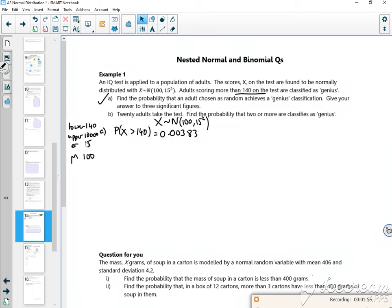Part b says 20 adults take the test. So now it's become discrete. I've got 20 adults taking the test. Find the probability that two or more of them are classed as genius. This now is my success for the binomial. I'll have another distribution, but this time it's binomial. I've got 20 people doing it and the probability that they're a genius is 0.00383.